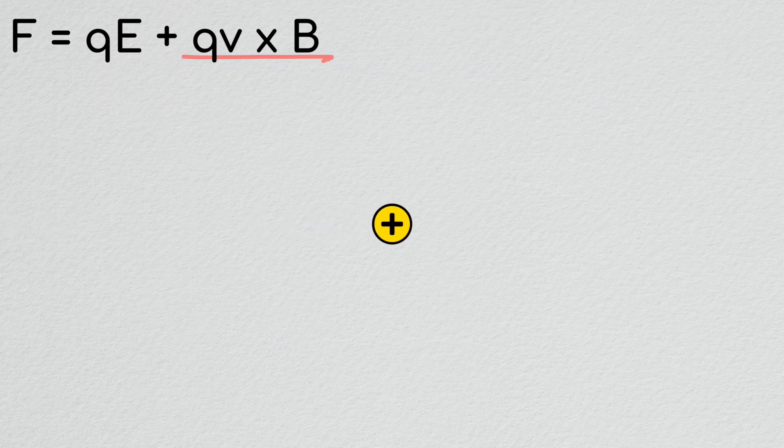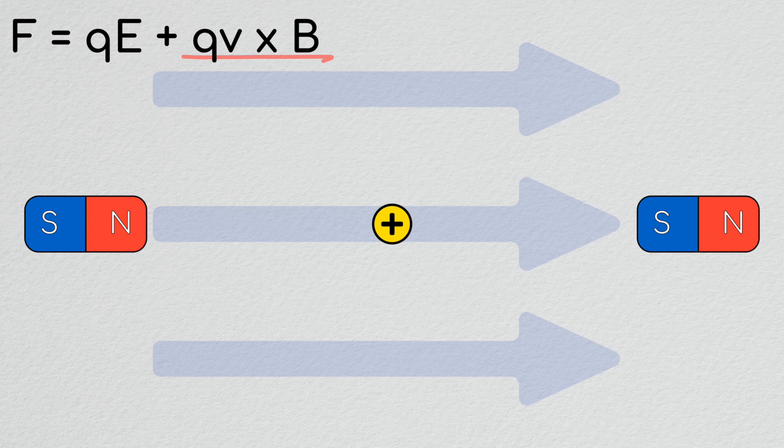The second term, which is more important for us today, says that if a charged particle moves through a magnetic field it will experience a force which is proportional to the strength of the magnetic field, the charge of the particle, and the portion of its velocity which is perpendicular to the field. This force will be applied perpendicular to both the magnetic field and the velocity of the particle.